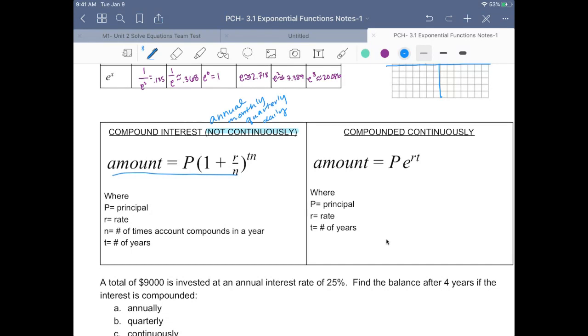If we are working on continuous compounding, we use P times the principal times the natural base raised to the rate times time. I call it PERT.